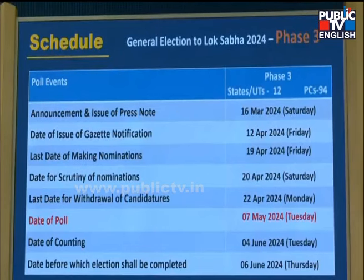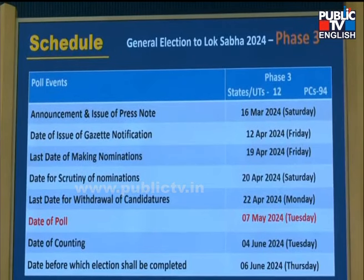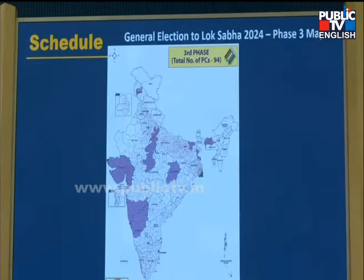Phase 3 would be from 12th of April and date of poll will be 7th of May. Is mein bhi total 12 states us samay mein ja rahi hongi. Aur is phase mein 3 naye rajay mein chunav shuru hoga.